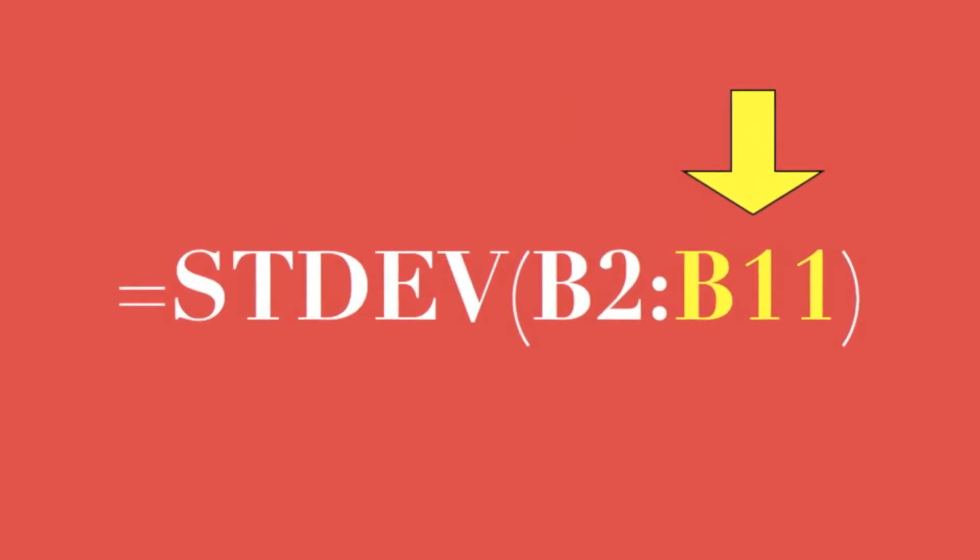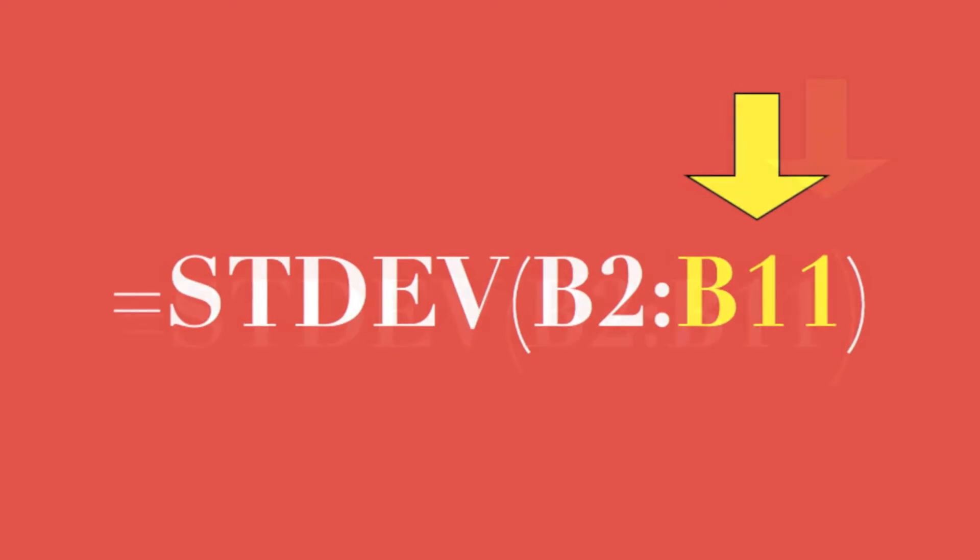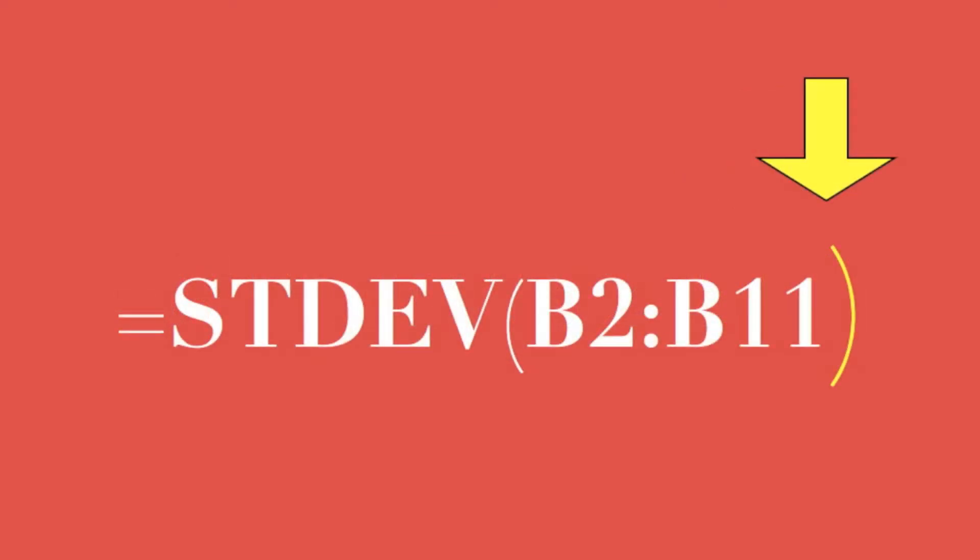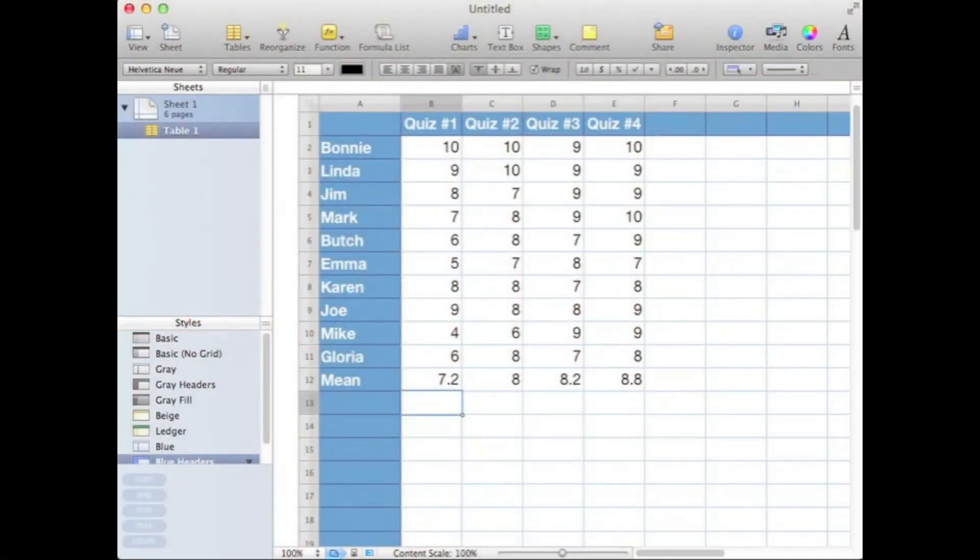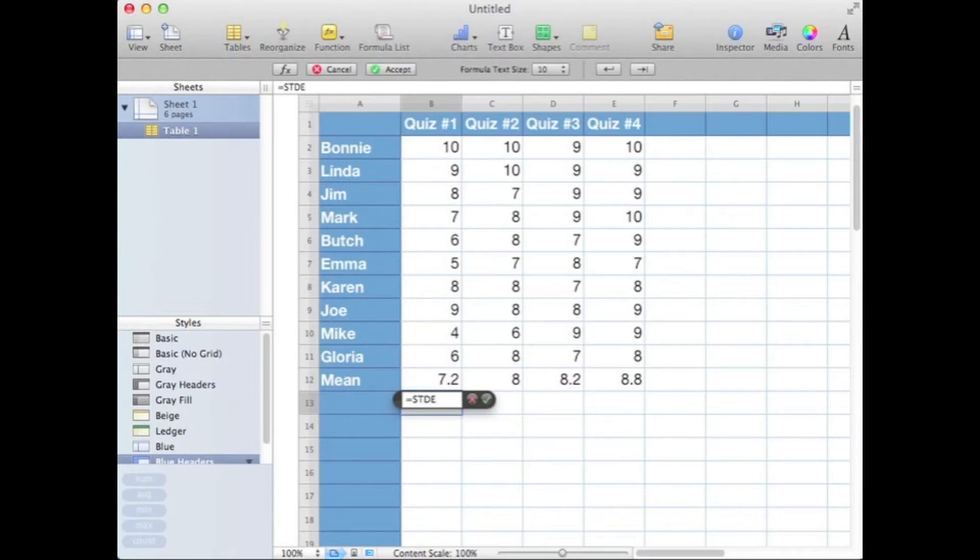And don't forget to close your parentheses. Okay, let's do a standard deviation at cell B13. I'm going to type in equals STDEV for standard deviation, a right parenthesis, then I'll click and drag to define my range and type the right parenthesis.